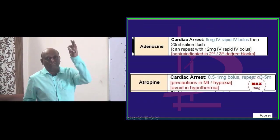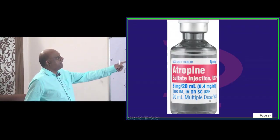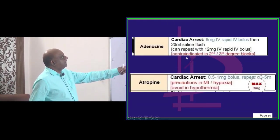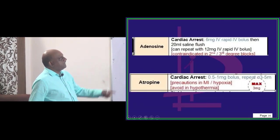That is the adenosine. So what will you remember? 6 milligram IV rapid IV bolus is what you have to remember. This is how you get the adenosine. Adenosine is not here.